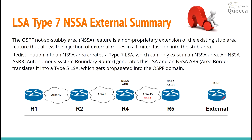Here we have an example. We have an external router running EIGRP, we have an ASBR, we have an ABR, and here we have the NSSA area. The ASBR generates a Type 7 LSA and sends it to the ABR.